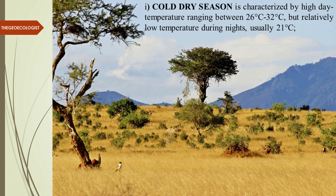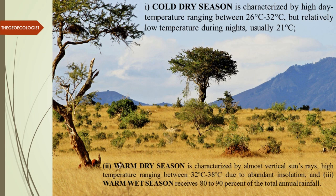The first season is the cold dry season, with temperatures of 26 to 32 degrees Celsius, falling down to 21 degrees Celsius — with no rainfall. The second is the warm dry season, with temperatures of 32 to 38 degrees Celsius. The third is the warm wet season, where 80 to 90 percent of total rainfall occurs, with temperatures varying between 20 to 30 degrees Celsius.